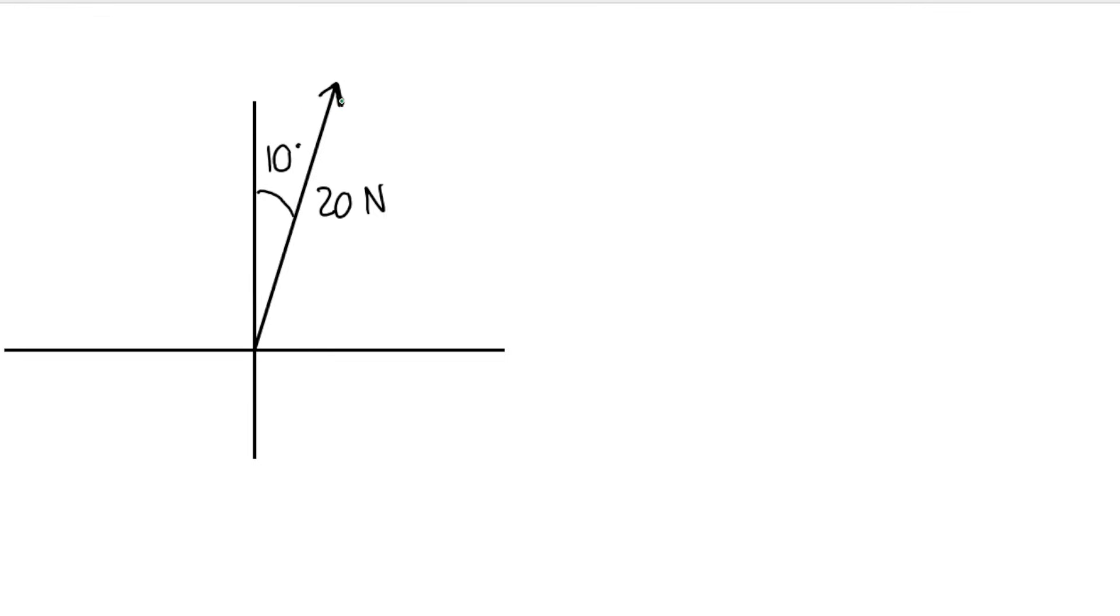If I want to break this vector up into components, it's going to have an x component that's going to the right. That's fx. And it's going to have a y component that is going up. How do I know that fx is going to the right and fy is going up? Because take a look at the vector. The vector is going up and to the right.